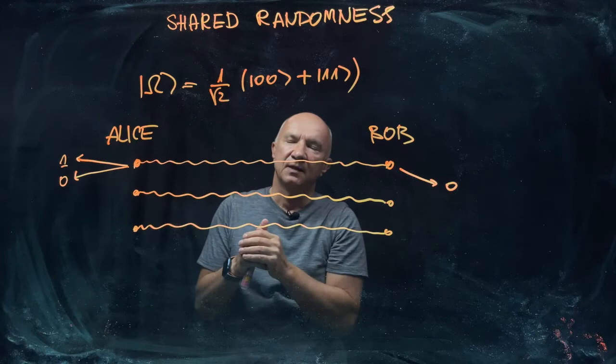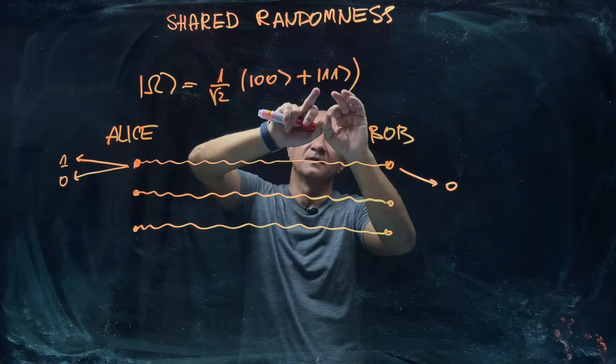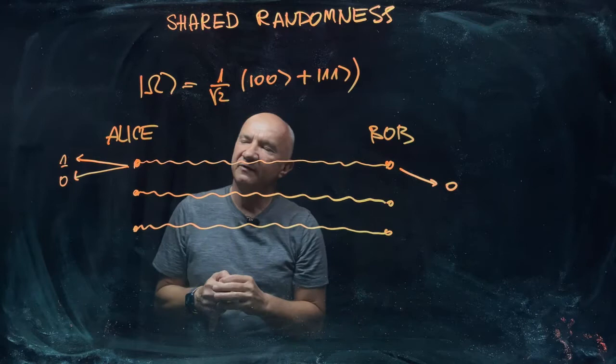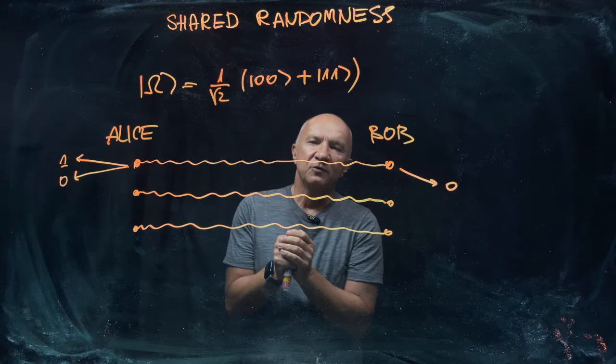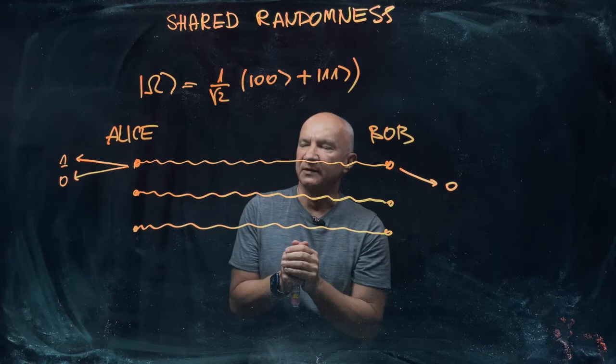And when Alice sees one, then she collapses the state into the state |11⟩. So somehow you may feel that Alice has instantaneous knowledge about Bob's state. Can it be used for instantaneous communication? Can Alice then communicate immediately to Bob a bit value zero or one?